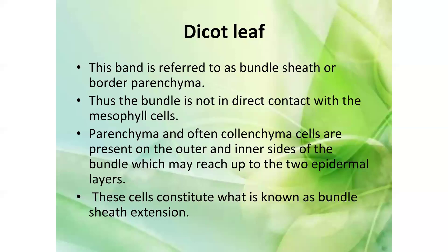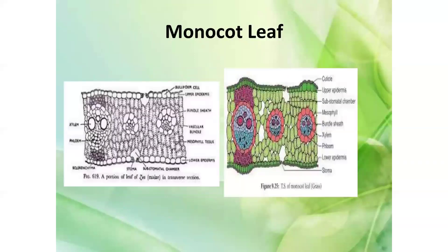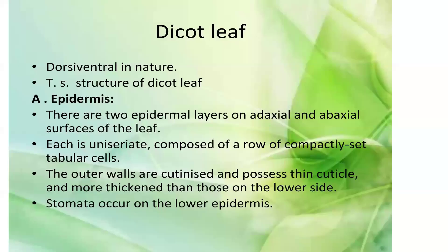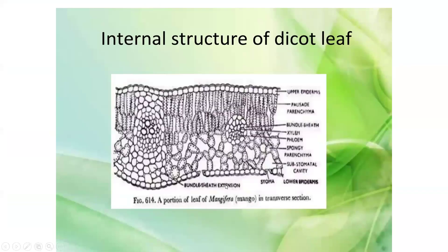Parenchyma cells are present on the outer and inner side of the bundle, which may reach up to the two epidermal layers — these constitute the bundle sheath extension. In the dicot leaf diagram, the xylem and phloem are surrounded by the bundle sheath ring.